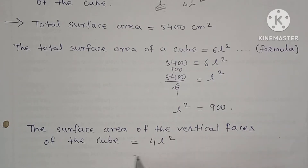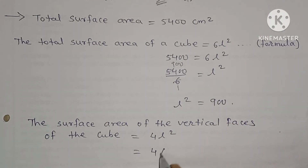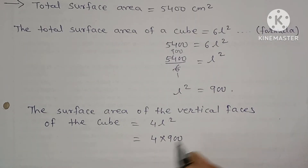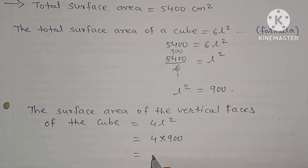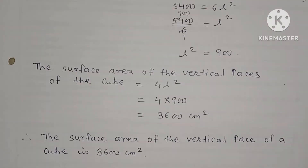Surface area of vertical faces of the cube = 4L² = 4 × 900 = 3600 square centimeter. Therefore the surface area of the vertical faces of the cube is 3600 square centimeter.